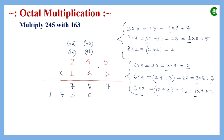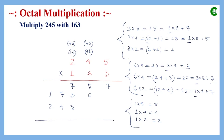For the third partial product with digit 1: 1 × 5 = 5, written directly since 5 < 8. Then 1 × 4 = 4, written directly since 4 < 8. Then 1 × 2 = 2, also written directly since 2 < 8. This gives partial product 245.